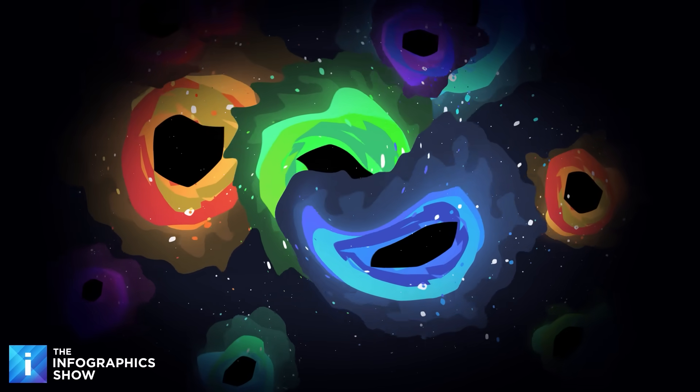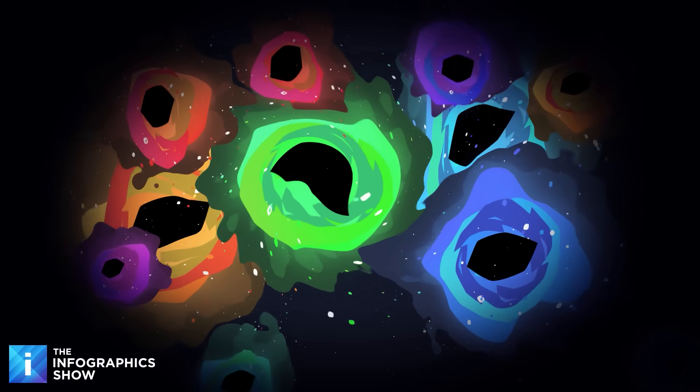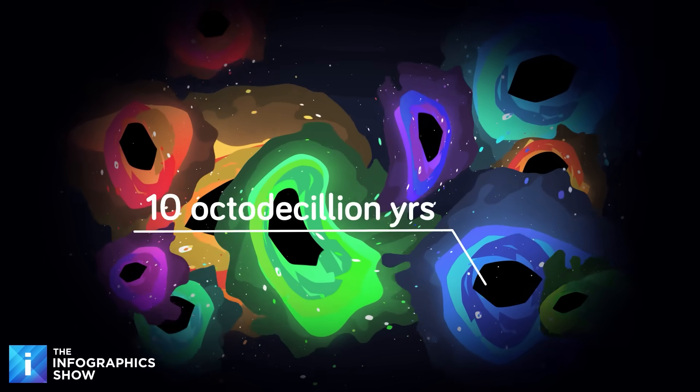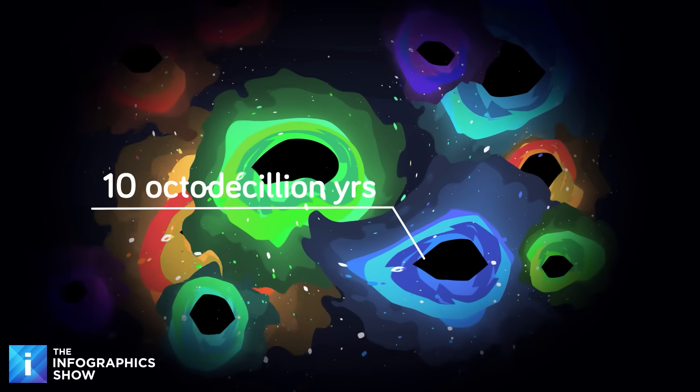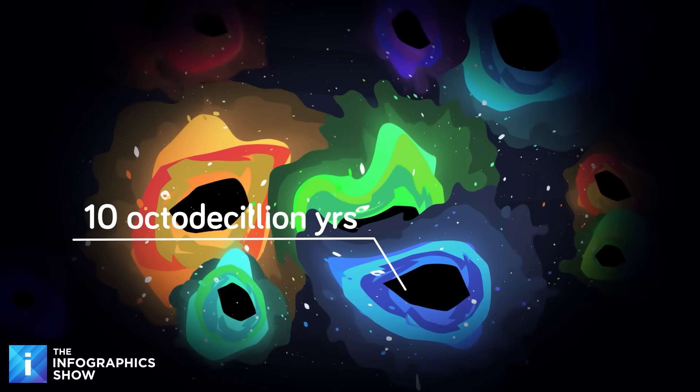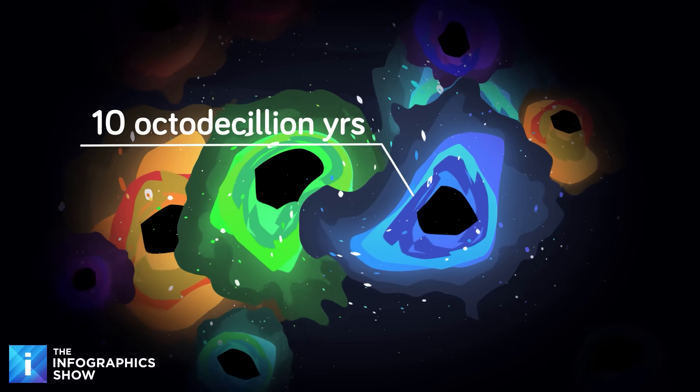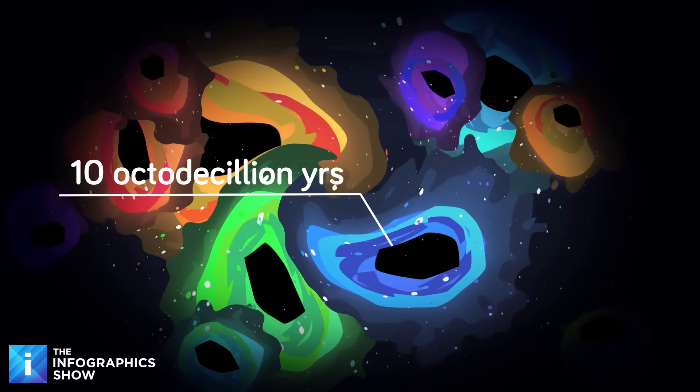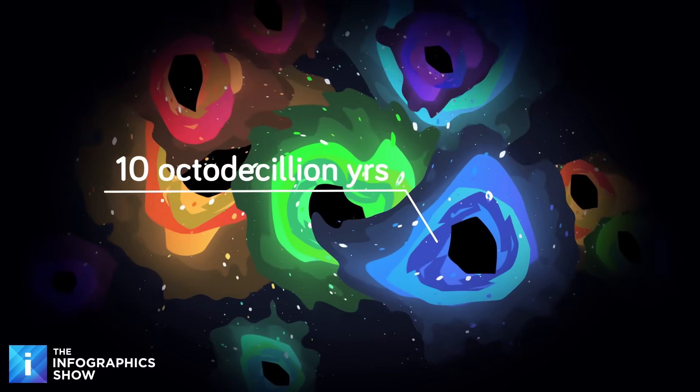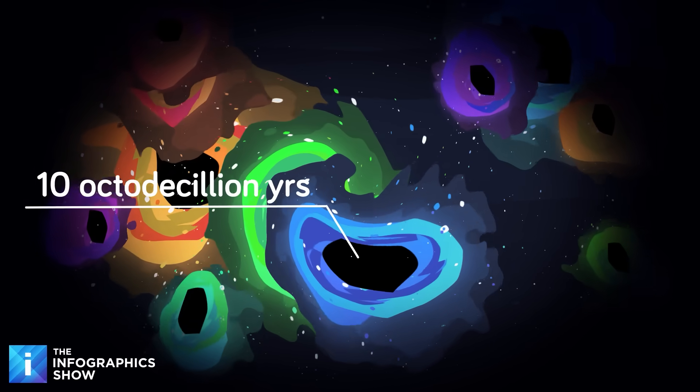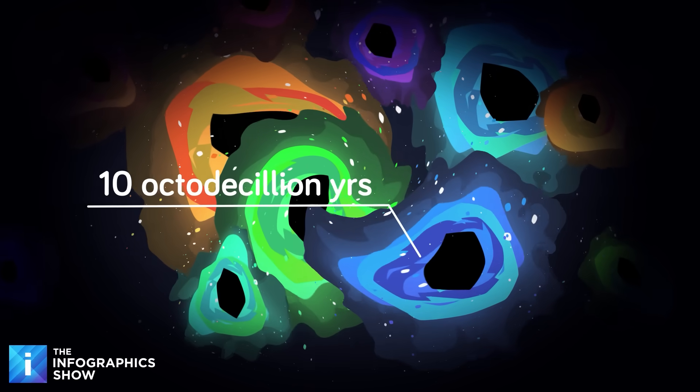But the supermassive black holes are in it for the long haul. A black hole with a billion solar masses would take ten octodecillion years to completely evaporate. The largest theoretical black holes could survive for ten unquinquagintillion years. Now that's a time span so vast that you could fit the entire age of our universe inside it a googol times over. That's a 1 followed by 100 zeros.